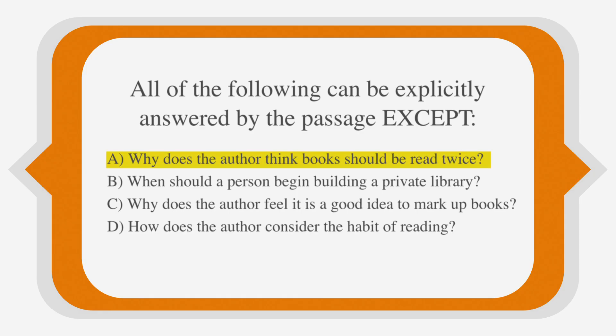Choice A, why does the author think books should be read twice, is asking us a question about the author's opinions or beliefs, which may be the main idea. So let's keep A in mind while we review our other choices. Answer choice B, when should a person begin building a private library, is specific but may have been implied as the author's opinion. Let's keep B in mind as well.